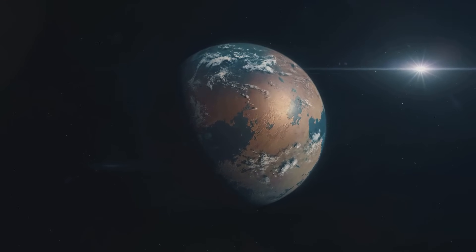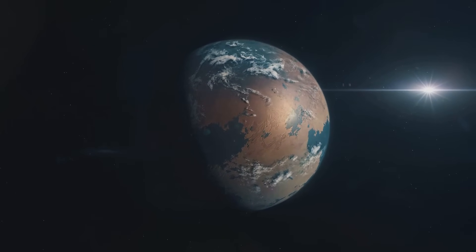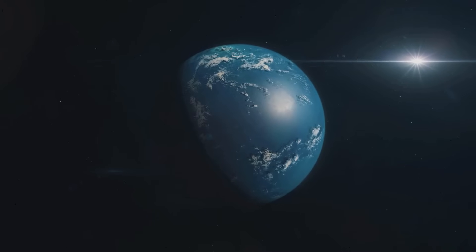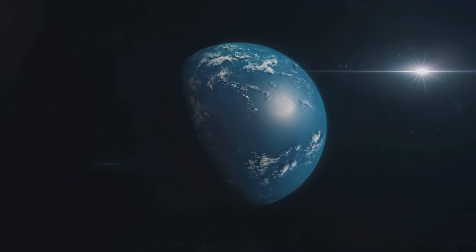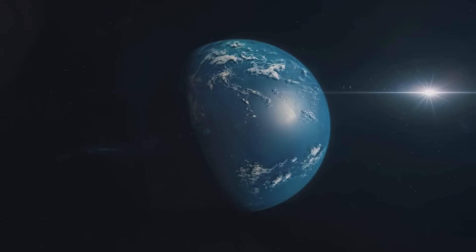These celestial bodies, often light-years away from us, are not just rocks floating around in space, but potential homes to life as we know it. Let's delve into some of these potential habitable planets. First up is Proxima Centauri b, the closest exoplanet to Earth, located just over four light-years away.